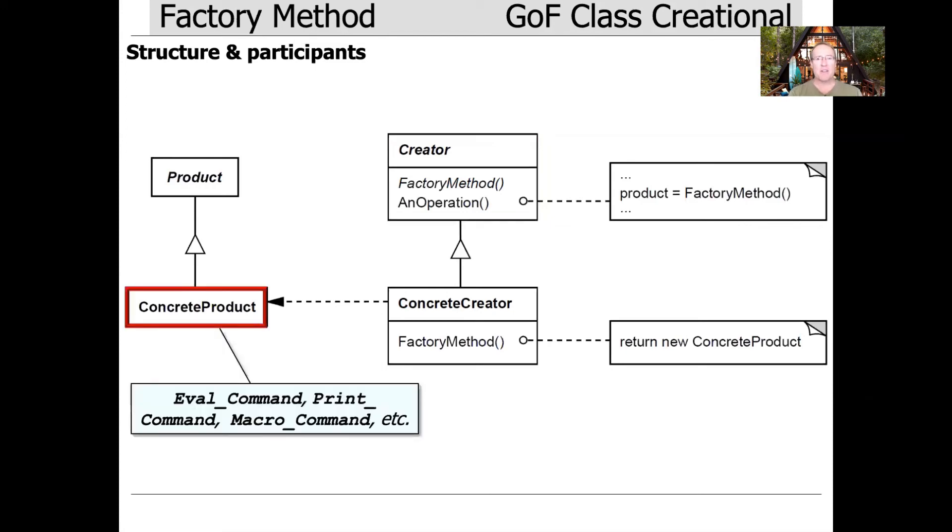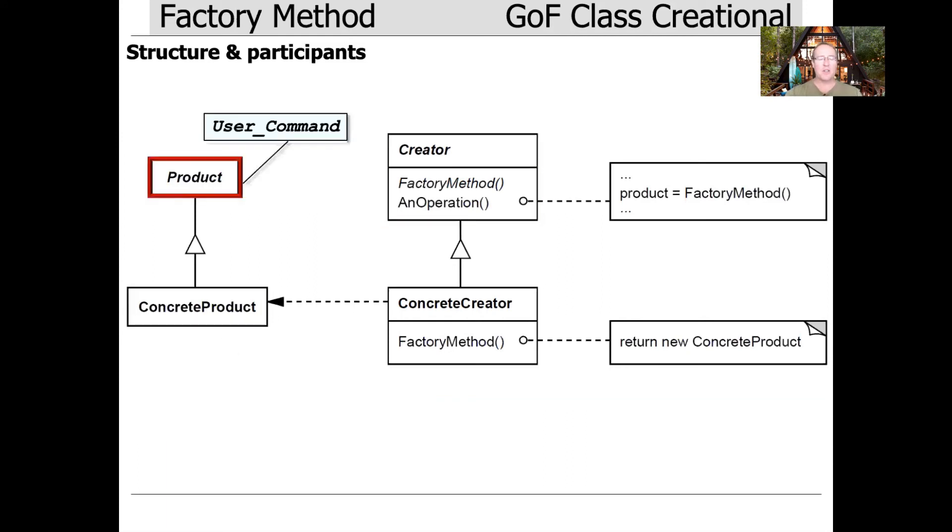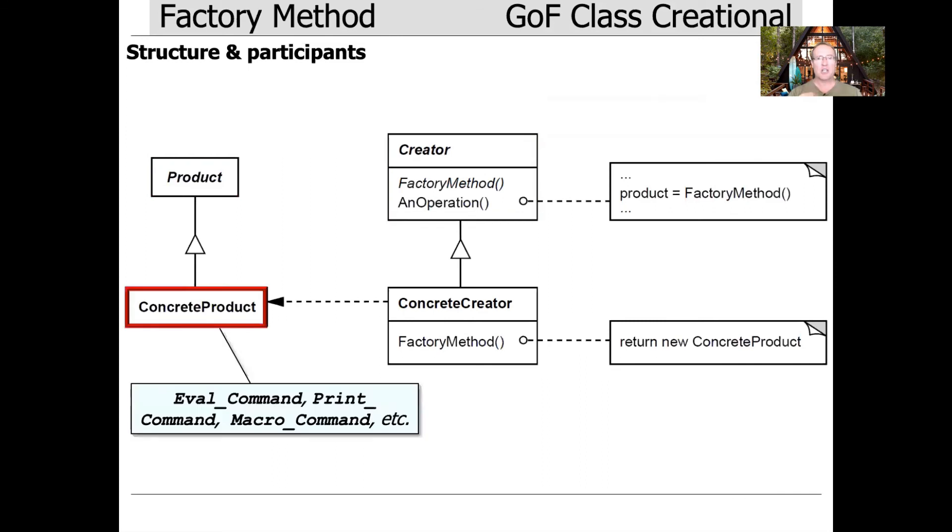And then we have the concrete product. That would be whatever the creator makes that is the appropriate subclass. So that could be eval command, print command, macro command, format command, quit command, and so on. That's what is created, but it comes back to the user as if it was just a product. So it looks like something to the user that's very simple, very canonical. But in fact, what was created was actually a subclass.